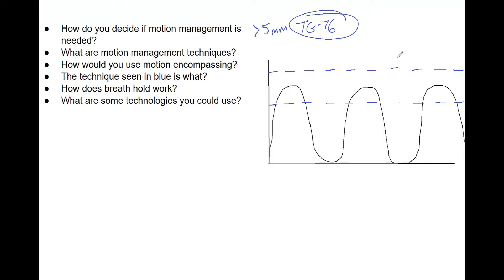The technique shown using the blue dashed lines is gating, where the beam only turns on in a certain part of the respiratory cycle. Down here the beam isn't on, but as soon as it enters the gating window, the beam comes on. As soon as the patient goes out of this window, the beam turns off. You determine this cycle using internal or external markers that are either on or inside the body. When you look at these graphs, it's good to know that the duty cycle is the length of time the beam is on compared to total treatment, because the beam may only be on about a third of the time the patient is breathing. Often you set these gating levels based on the duty cycle.